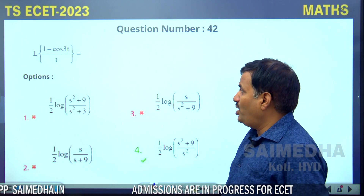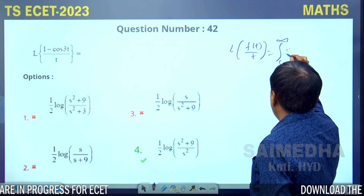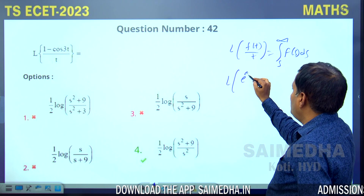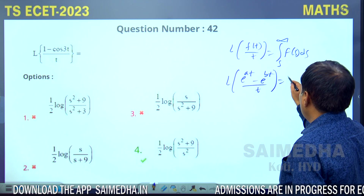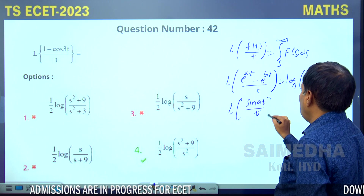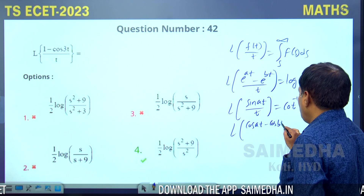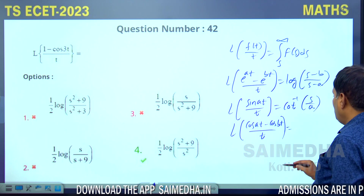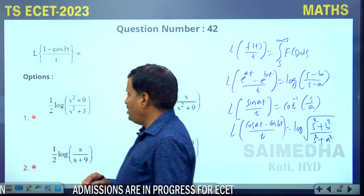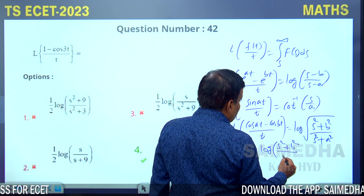For Laplace of (1-cos3t)/t, we use the formula: Laplace of f(t)/t = ∫_s^∞ F(s) ds. The standard result for Laplace of (cos(at)-cos(bt))/t is (1/2)log((s²+b²)/(s²+a²)).